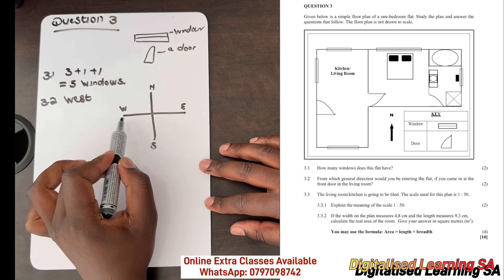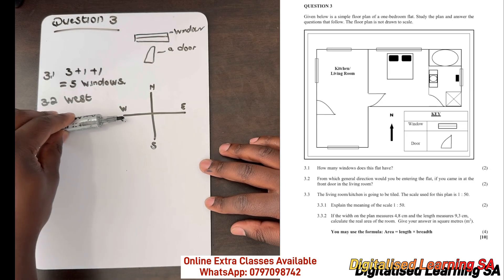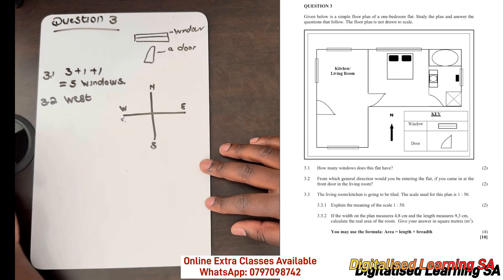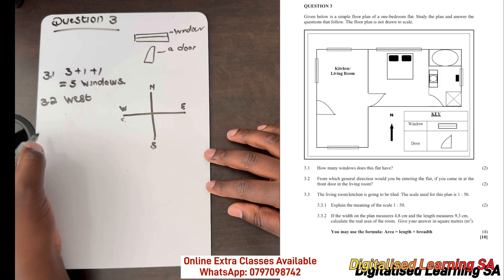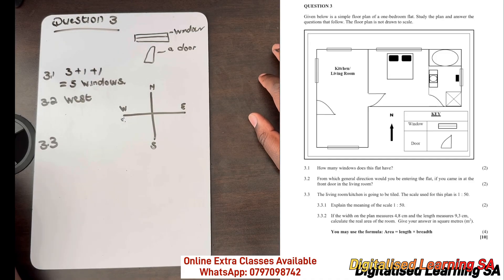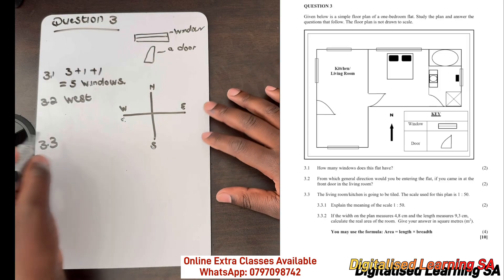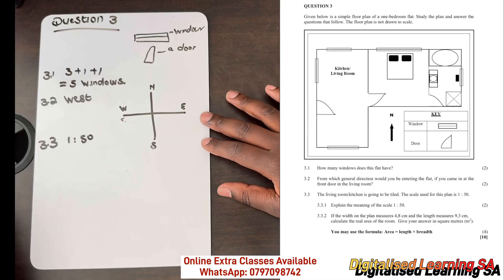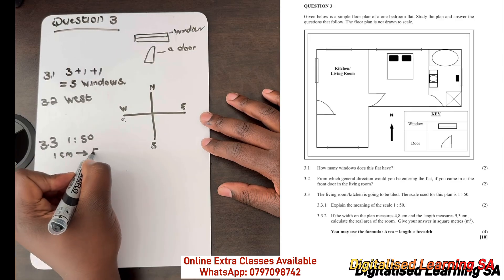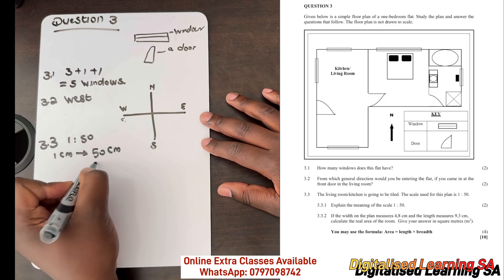You will be entering coming from the west. Now let's move to question 3.3. The living room or kitchen is going to be tiled. The scale used for this plan is 1 to 50. Explain the meaning of the scale 1 to 50. So 1 to 50 basically means that 1 centimeter on paper equals 50 centimeters in real life.